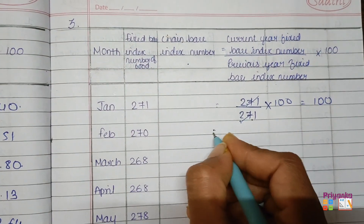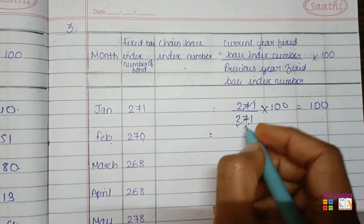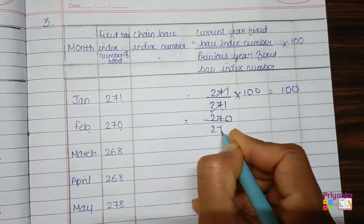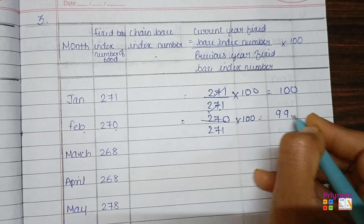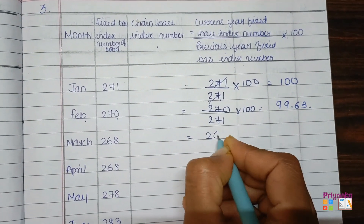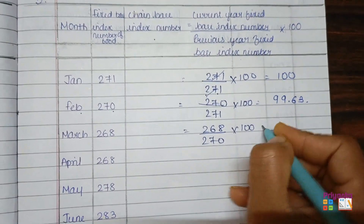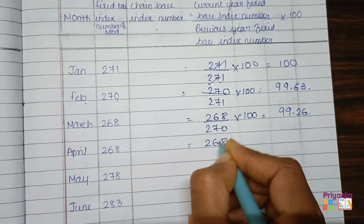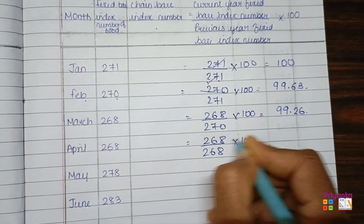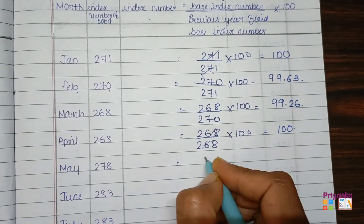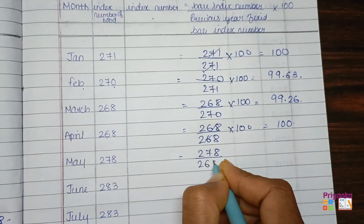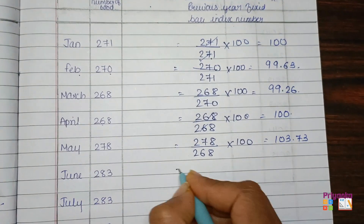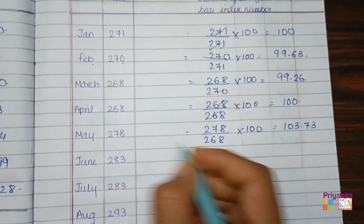This is a very important point — please remember when solving this. Moving to the next month: current year fixed base is 270, divided by previous year fixed base 271, multiplied by 100 — giving 99.63. Next: current year 268, previous year 270 × 100 = 99.26. Next: current year 268, previous year 268 × 100 — both cancel, answer is 100. Next: current year 278, previous year 268 × 100 = 103.73.